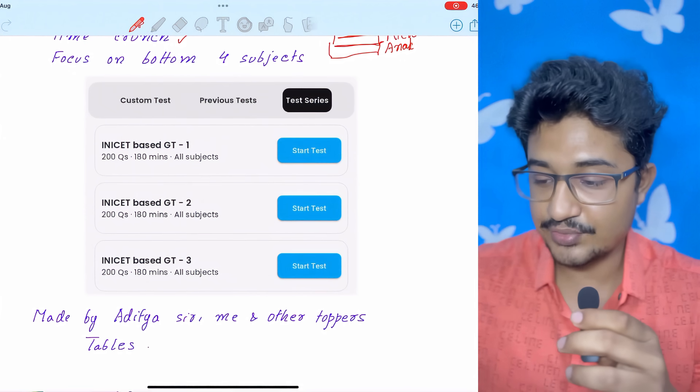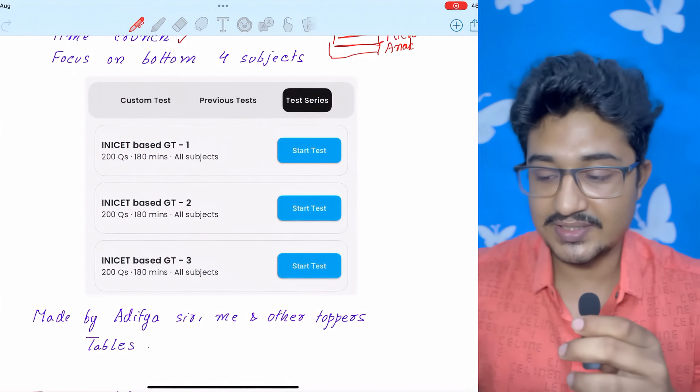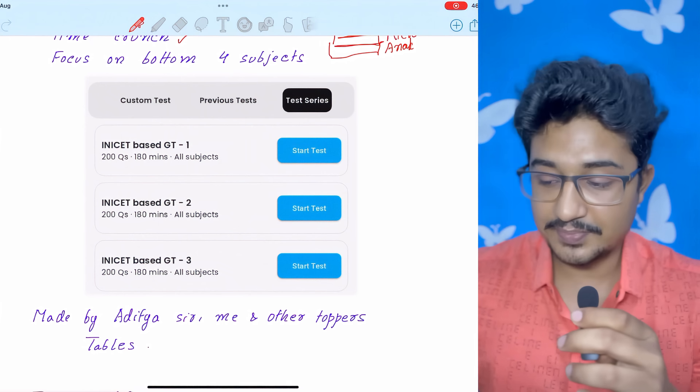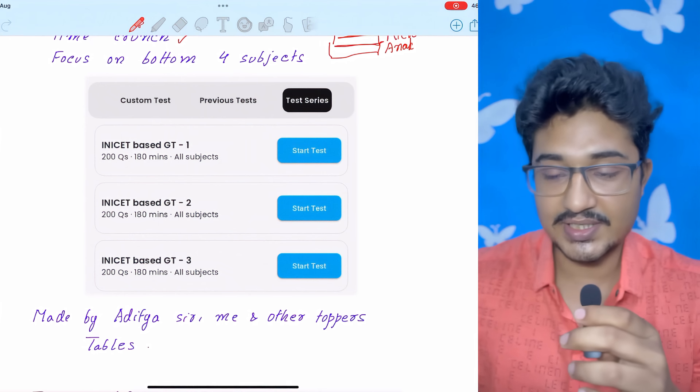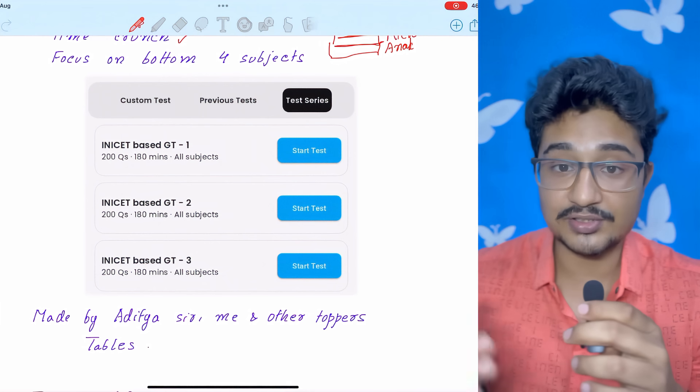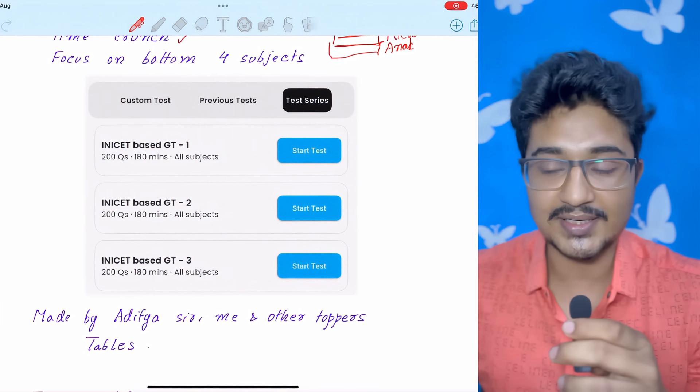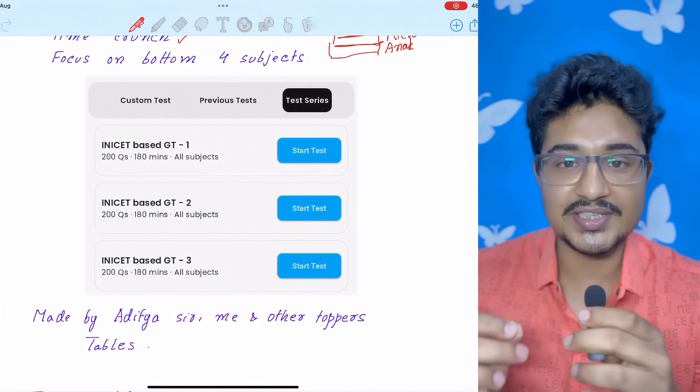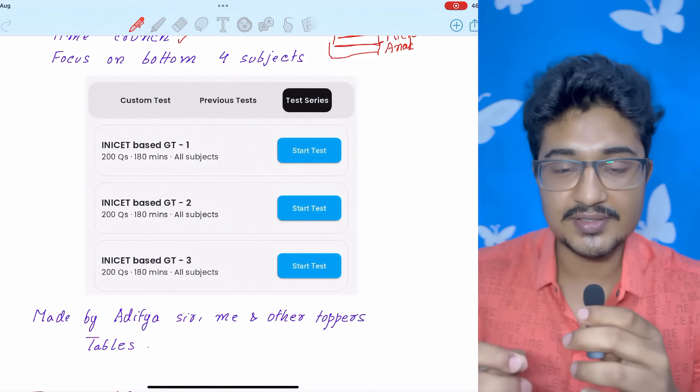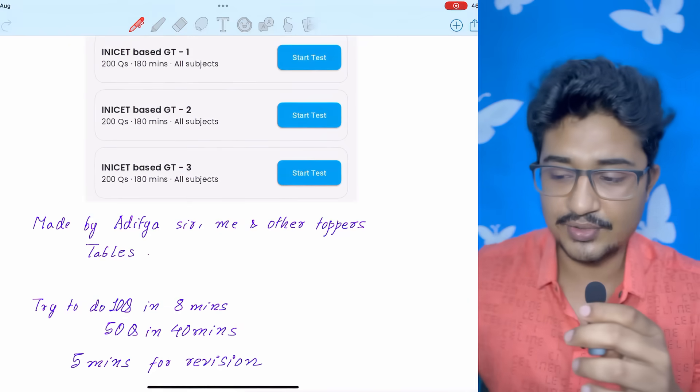And in Reflex, if you are using, there are three INICT based GTs which are specially made by Aditya Sir. One GT I had also contributed and other toppers have also contributed in making these GTs. That's why I am saying that because these GTs will give you an INICT flavor. So, if you are having reflex, then you can give it.